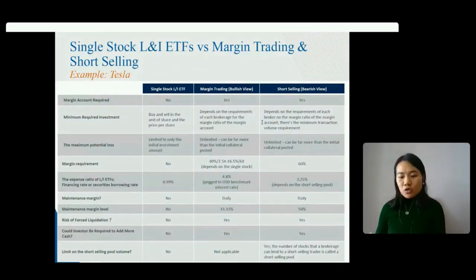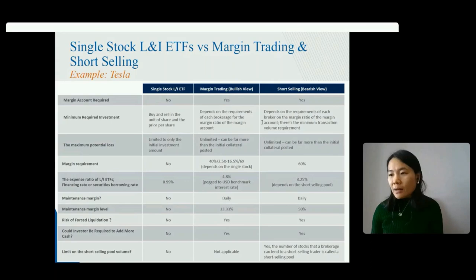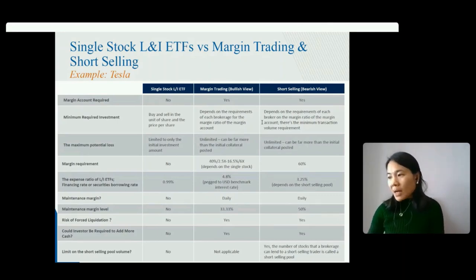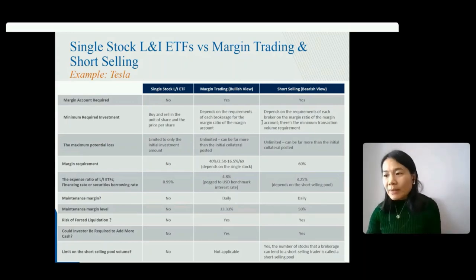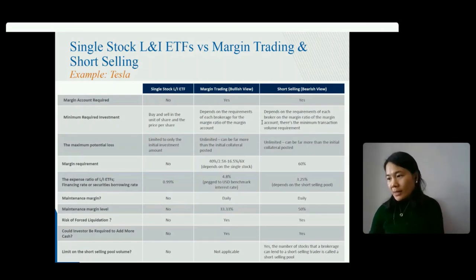Compared to margin trading or short selling of single stocks, single stock leverage and inverse ETFs are easier and simpler to use with lower trading costs. For example, the total expense ratio of the Tesla leverage and inverse ETF is 0.99% annually, which is only about 2 basis points per week. In contrast, the financing rate for margin trading Tesla is about 4.8% annually, and the short selling rate is about 3.25% annually. Additionally, short selling rates are not fixed and depend on the short selling pool, and sometimes the stock cannot be borrowed from the broker at all.